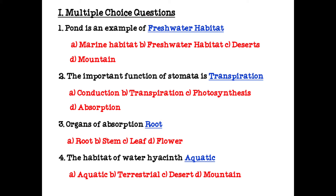First one: Pond is an example of fresh water habitat. The important function of stomata is transpiration. Organ of absorption: Root. The habitat of water hyacinth is aquatic.